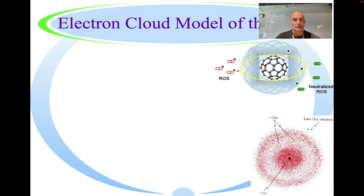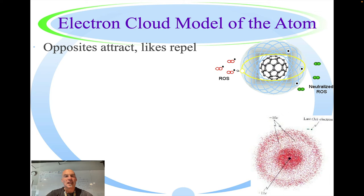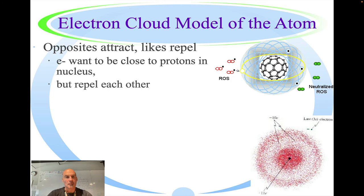Electron cloud model of an atom. Just like magnets, opposites attract and likes repel. The electron wants to be as close to the protons in the nucleus as possible, the electron being negatively charged, the protons being positively charged. So again, like a magnet, they want to be attracted to each other.